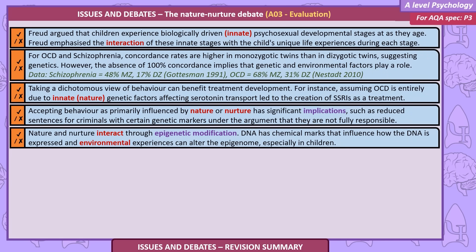Freud argued that children experience biologically driven innate psychosexual developmental stages, while emphasising the interaction of these stages with the child's unique life experiences. For OCD and schizophrenia, concordance rates are higher in monozygotic twins than in dizygotic twins, suggesting a genetic component. However, the absence of 100% concordance implies that environmental factors also play a role. Taking a more dichotomous view can benefit treatment development — assuming OCD is entirely due to genetic factors affecting serotonin transport led to the creation of SSRIs as a treatment.